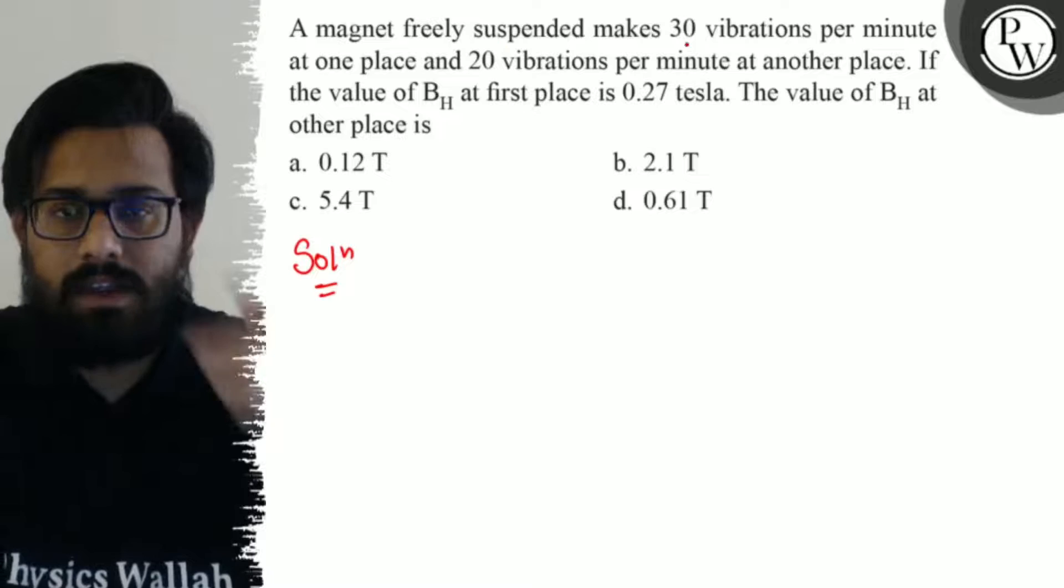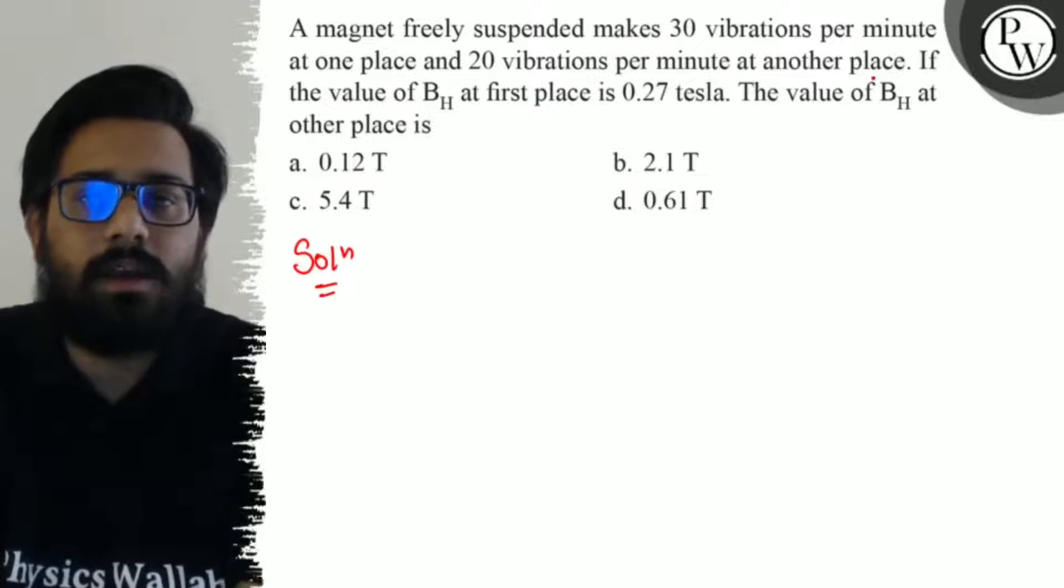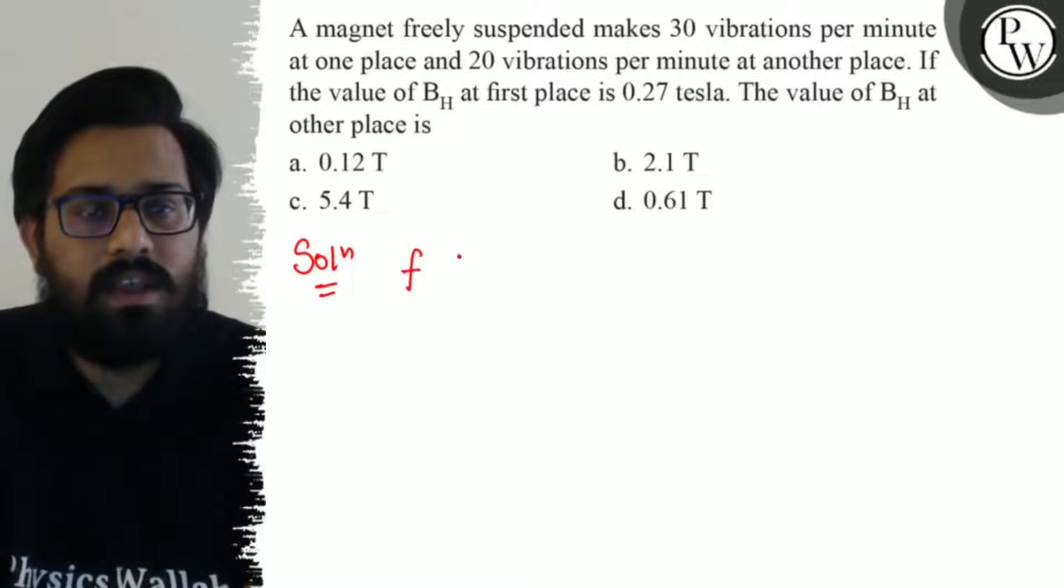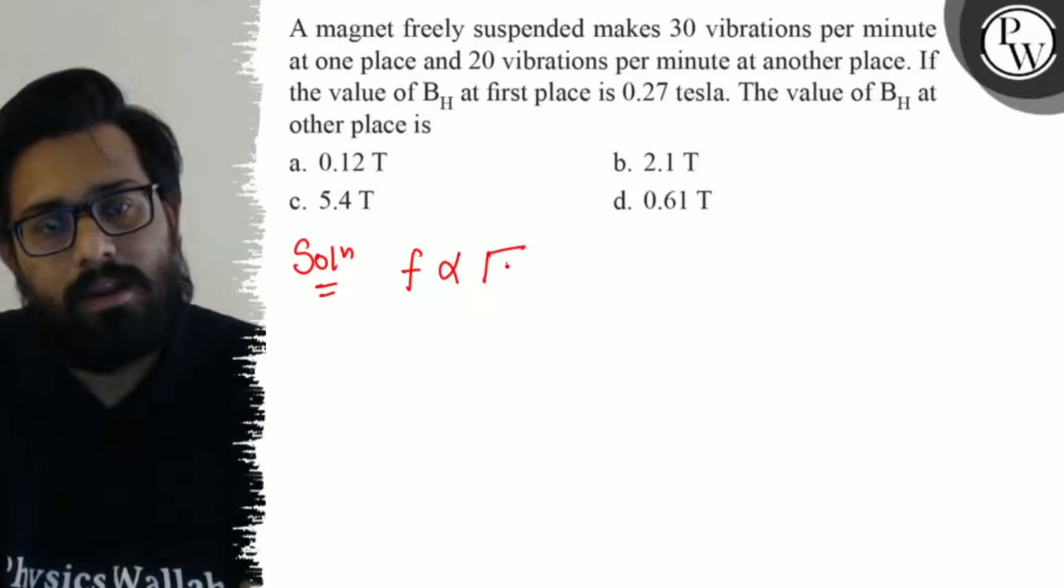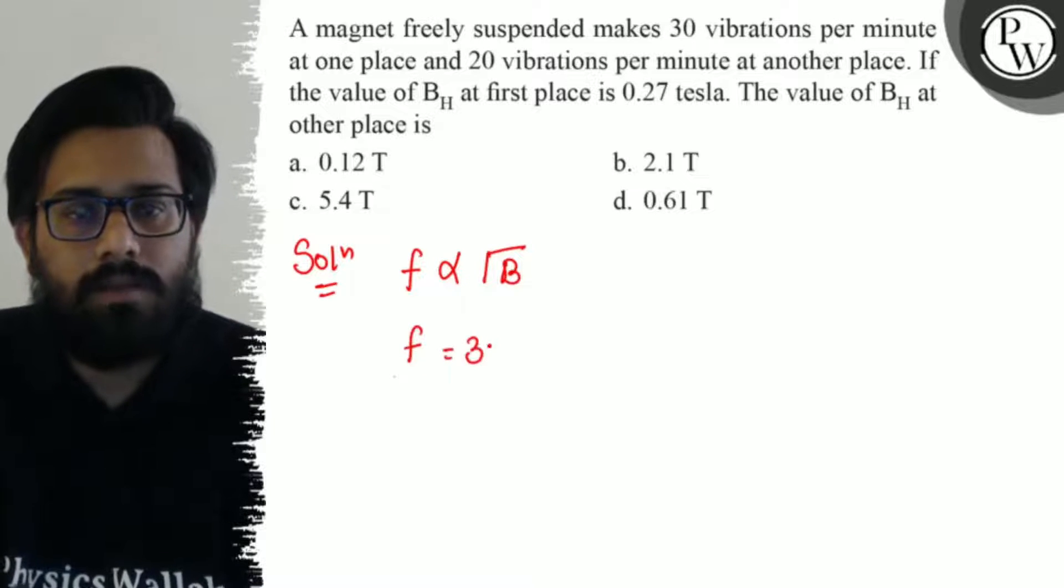Okay, so we know that frequency is proportional to the magnetic field. In the first case, my frequency, you have 30 vibrations per minute.